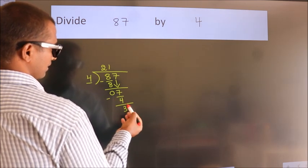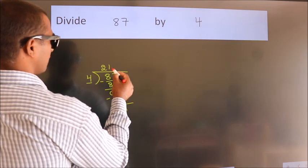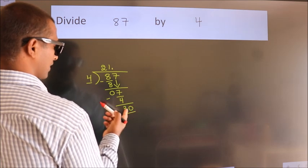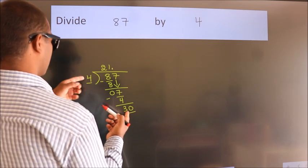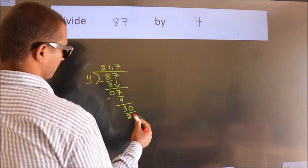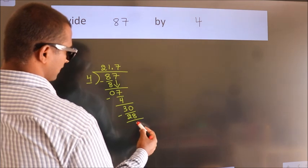We get 3. After this, no more numbers to bring down. So what we do is, we put a dot and take 0. So 30. A number close to 30 in the 4 table is 4 7's are 28. Now we subtract. We get 2.